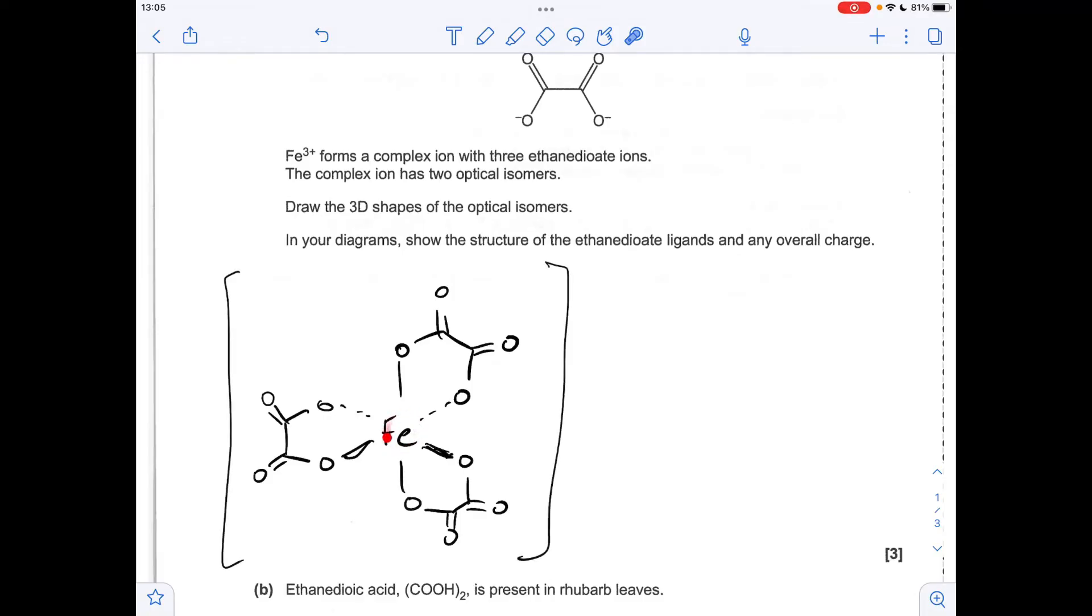So we're told that this is Fe3+ in the middle, and the ligand, you can see, has a 2 minus charge. So obviously we've got three 2 minus charges, so 6 minus with 3 plus gives an overall charge of 3 minus.